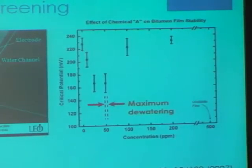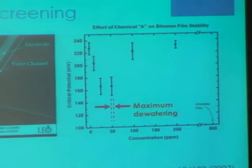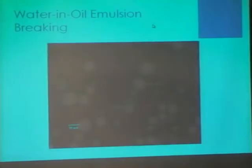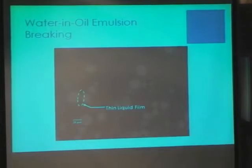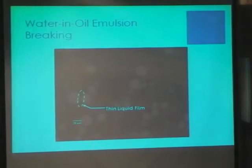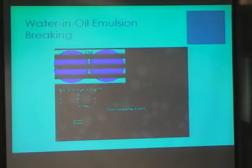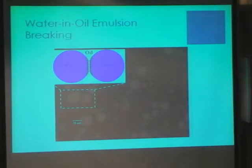If you are in the demulsifying business, you would know that the idea of demulsification involves typically diluted bitumen — dilbit — that you get with some water drops in it. To break them, you need to break the interfacial oil film between them. There is a huge demulsifier market which tries to design chemicals that weaken the interface between these two droplets and coalesce them.